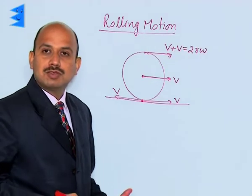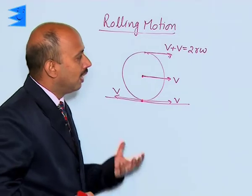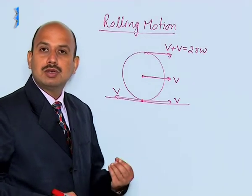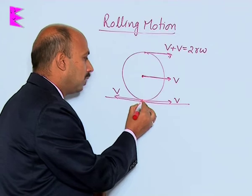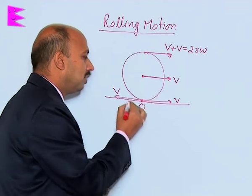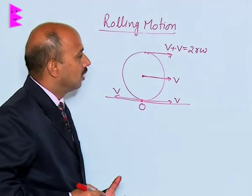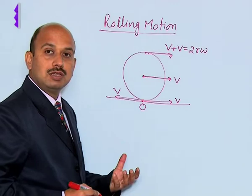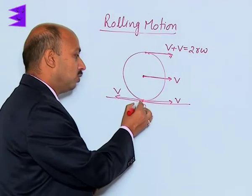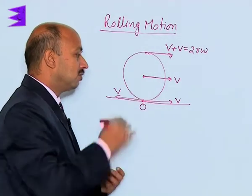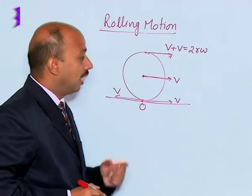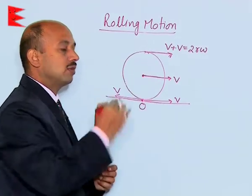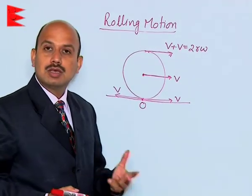If these two velocities are equal, then this point comes to relative or momentary rest, and the center of mass is moving with velocity V while the top point is moving with velocity 2V, that is 2r omega. If this situation is found, that is the condition of rolling without slipping because point O is momentarily at rest, and the axis of rotation has shifted to this contact point.